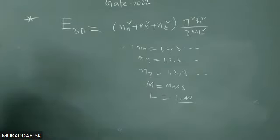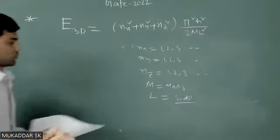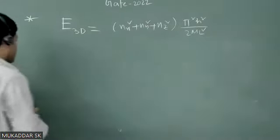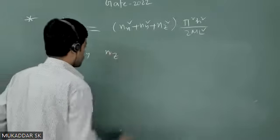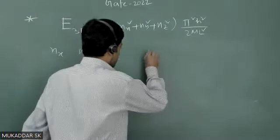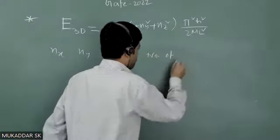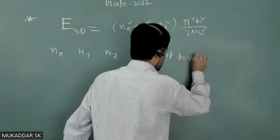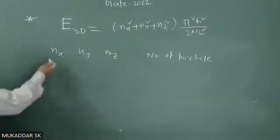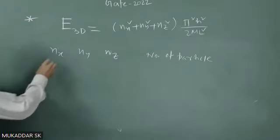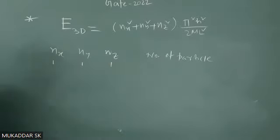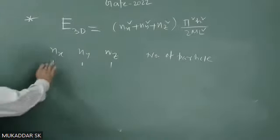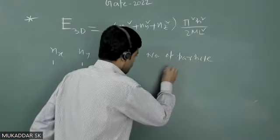I will use this formula to calculate the first four magic numbers if the nucleon inside the nucleus is confined like a three-dimensional cubical box. Let us take the set of (nx, ny, nz) values and the corresponding number of particles. The first set of (nx, ny, nz) values can be (1, 1, 1). This represents one state, and since nucleons are spin-half particles, two nucleons can occupy a single state.